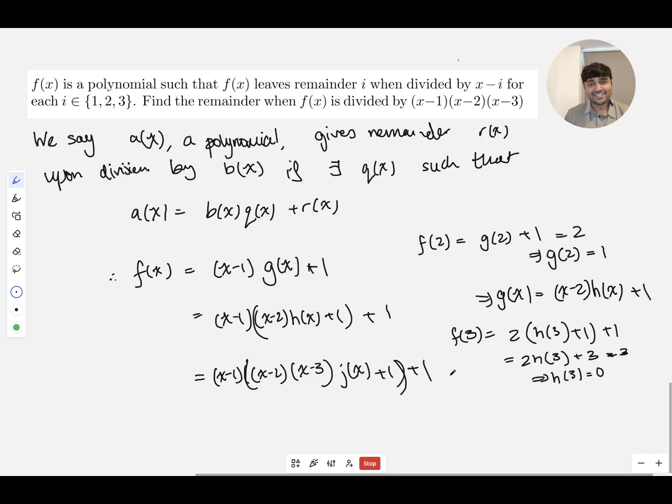And so now, if we just expand this, we get (x minus 1)(x minus 2)(x minus 3) times j of x, plus x, plus 1, and then plus 1. So those two cancel out. And so f of x is actually just equal to (x minus 1)(x minus 2)(x minus 3) times some function j of x, plus x.